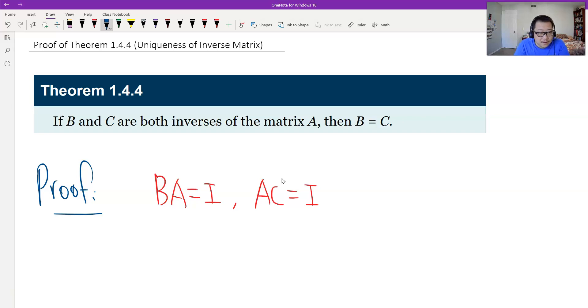For these two, therefore we have matrix B equals B times I. And the matrix I should be A times C. Then I can associate B and A together, times C. This is associative.